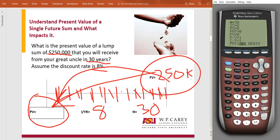We know that it's worth $250,000 in 30 years. So, let's type that in, $250,000. Okay, now we're ready to solve for our present value.